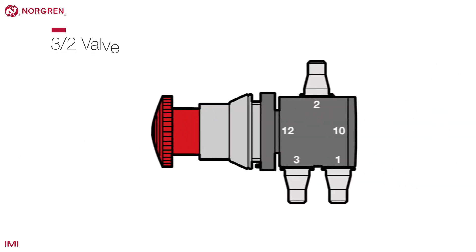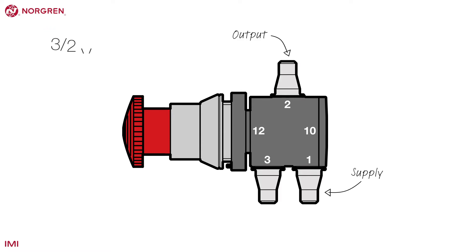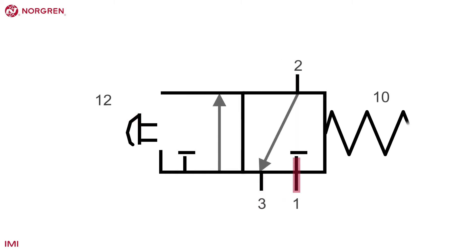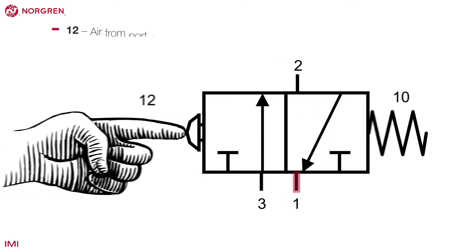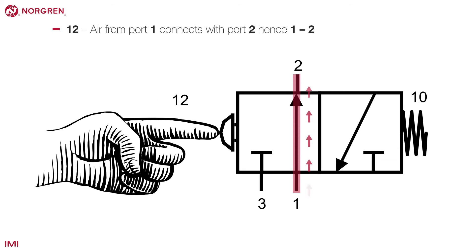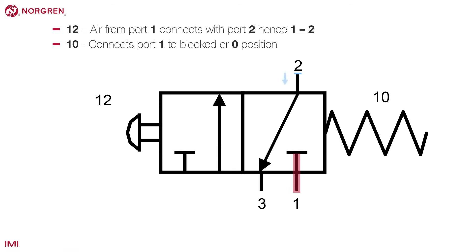A 3-2 valve has 3 ports and 2 positions. It works in a similar way to the 2-2 valve, but with the addition of an exhaust labelled as port 3. This valve also has 1-2 and 1-0 positions. However, when in the 1-0 position, the air from port 2 is vented through port 3.